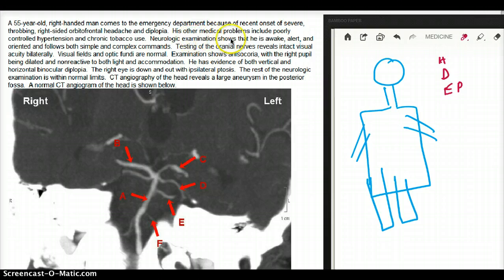His other medical problems include poorly controlled hypertension and chronic tobacco use. So he's a smoker. Neurologic exam shows that he's awake, alert, and oriented, and follows both simple and complex commands. Testing of the cranial nerves reveals intact visual acuity bilaterally.